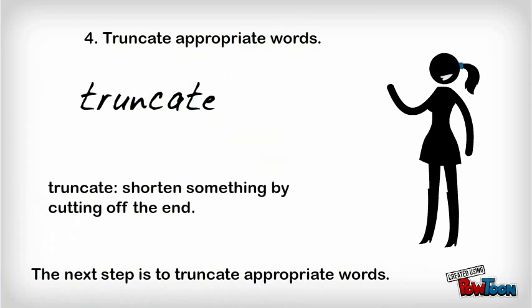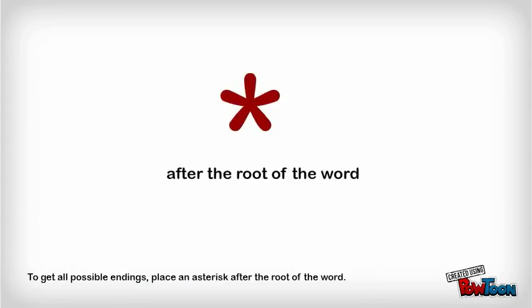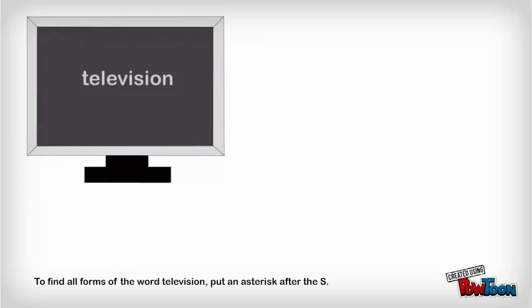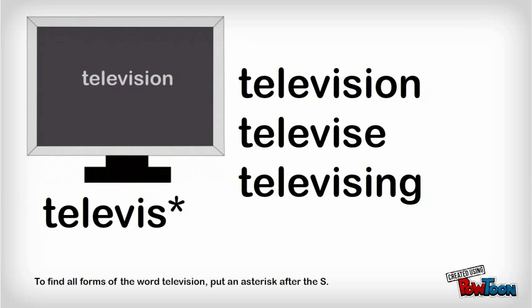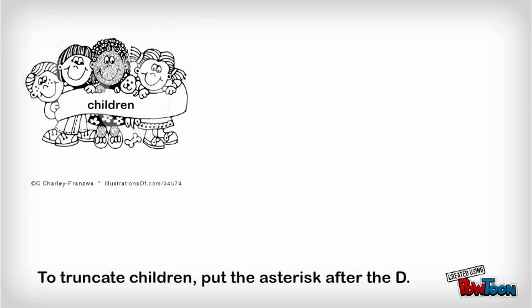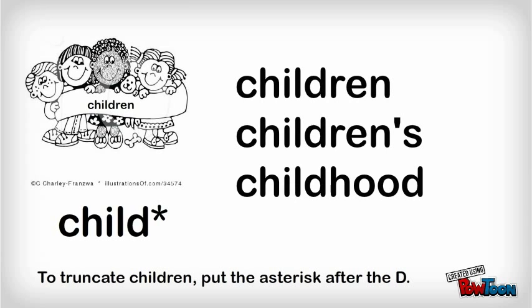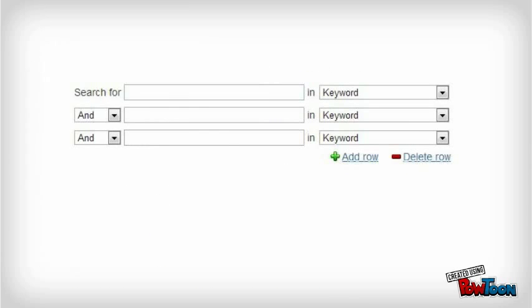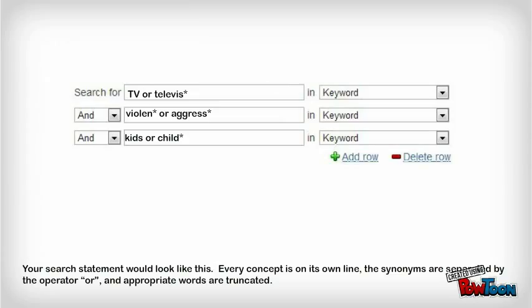The next step is to truncate appropriate words. To get all possible endings, place an asterisk after the root of the word. To find all forms of the word television, put an asterisk after the S. To truncate children, put the asterisk after the D. Your search statement would look like this: every concept is on its own line, the synonyms are separated by the operator OR, and appropriate words are truncated.